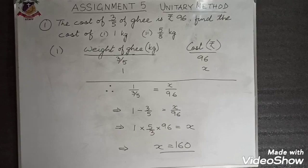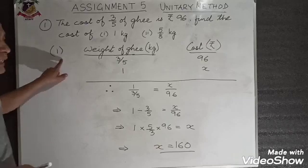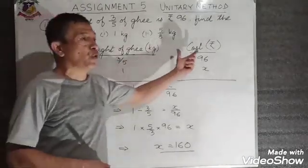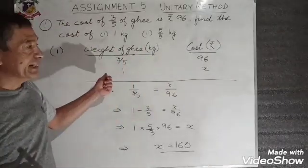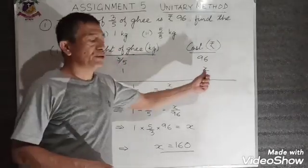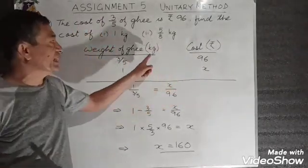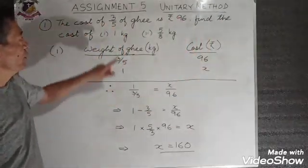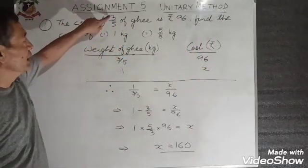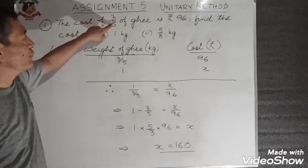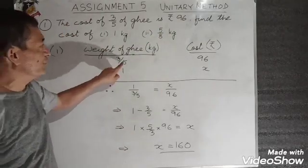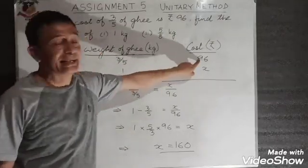Taking number 1, I've divided it into 2 columns — the weight of ghee and the cost. The weight is in kg and the cost in terms of rupees. From the question, 3 fifths of the ghee costs 96 rupees, so 3 fifths is 96.